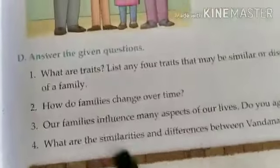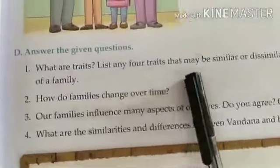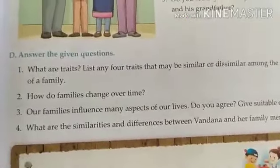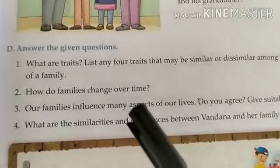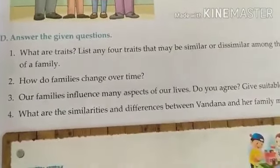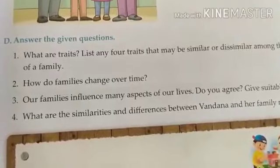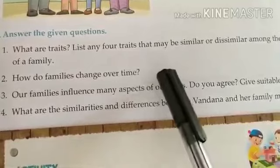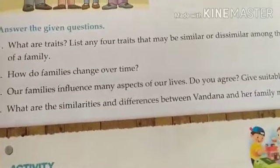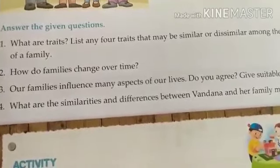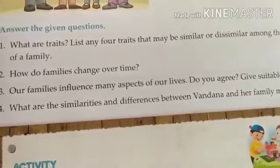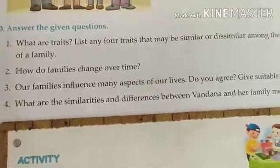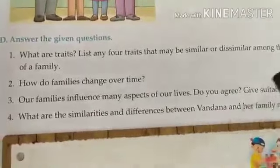Question number 1 will be your homework. 'List any 4 traits that may be similar or dissimilar among family members.' We have already discussed traits you get from your grandparents or maternal grandparents. You have to write 4 traits from your own family — traits that you feel you share with a family member — which can be similar or dissimilar.